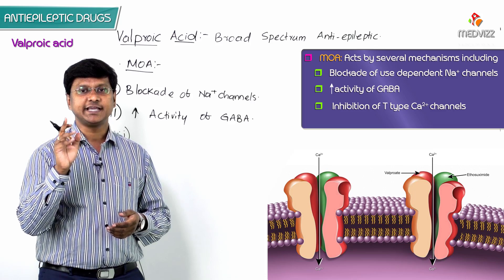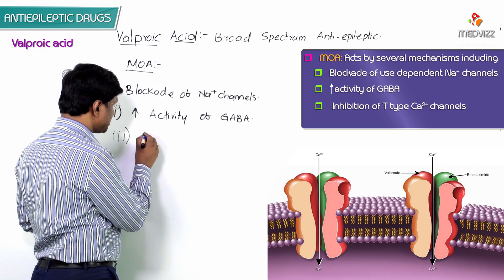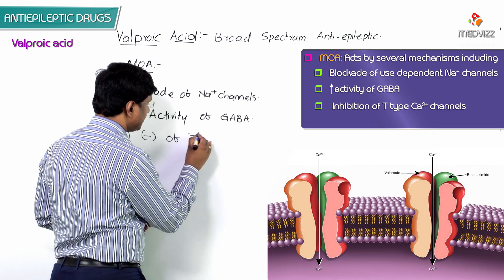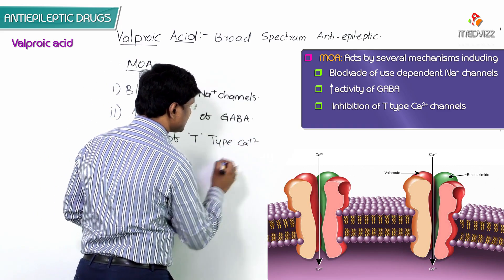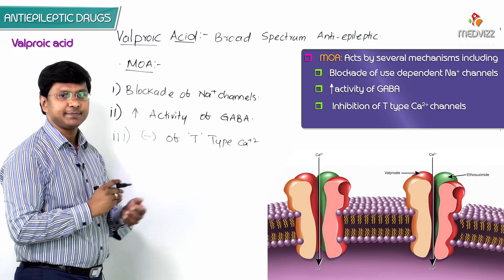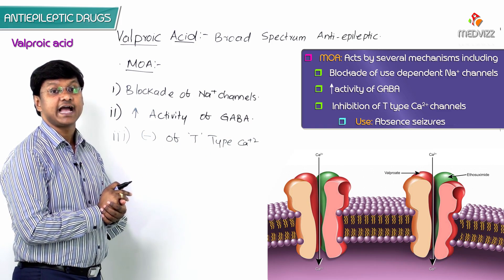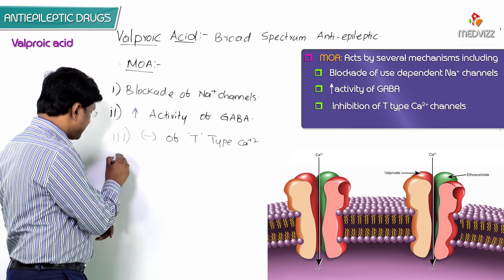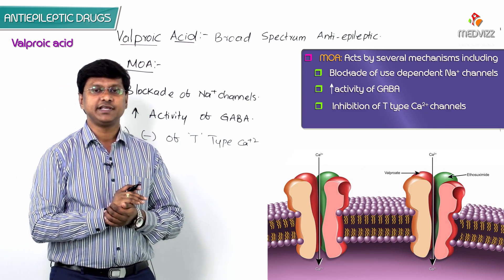The third mechanism of action is that valproic acid also causes inhibition of T-type calcium channels. Because it inhibits T-type calcium channels, this property is particularly useful in the treatment of absence seizures.